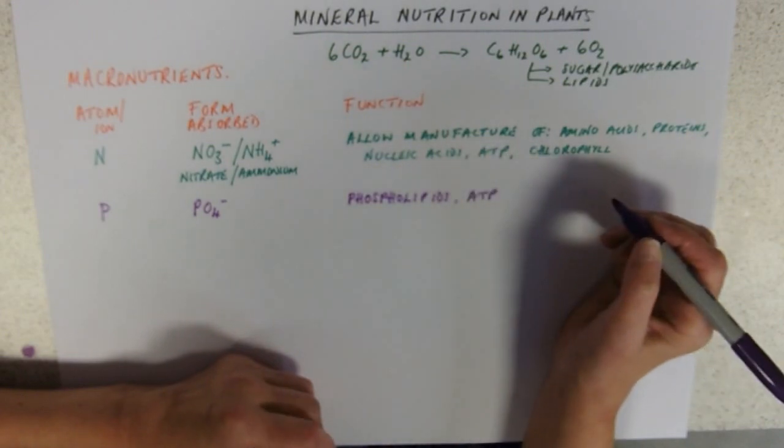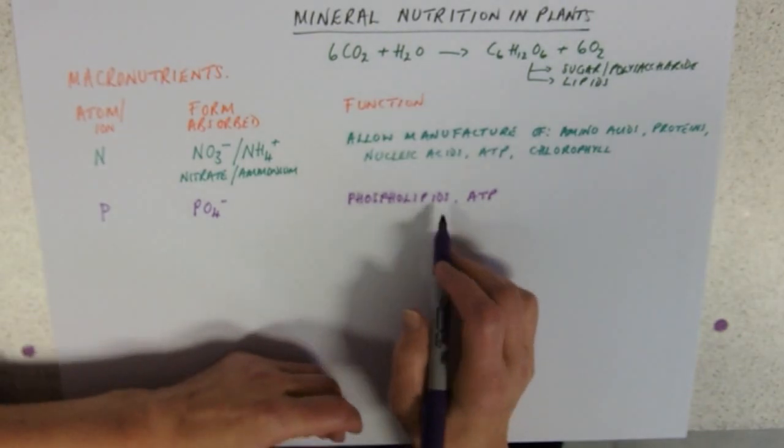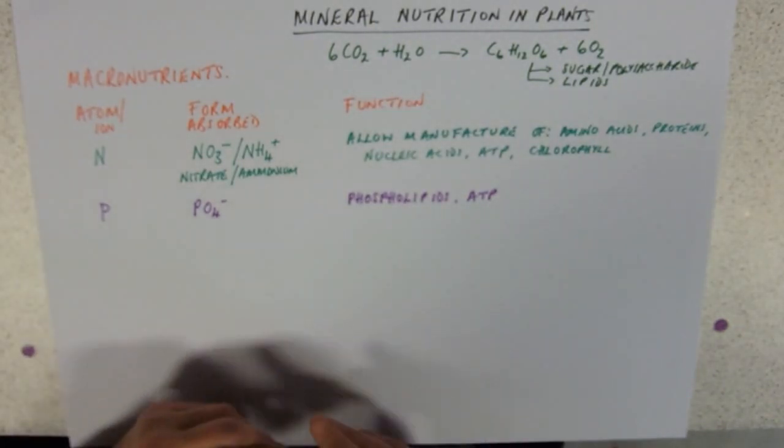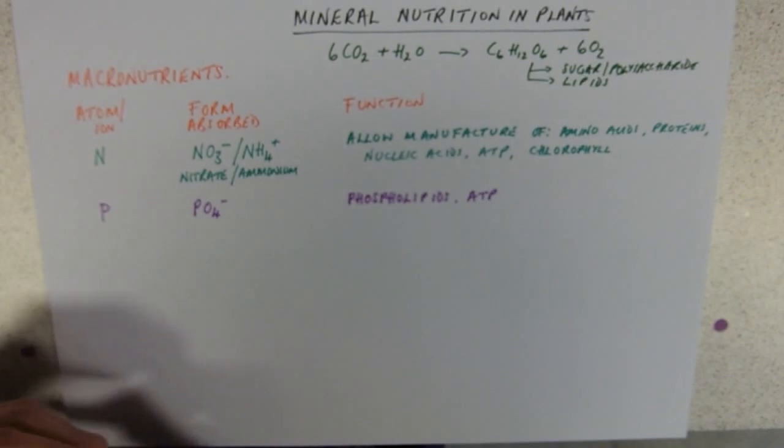Like phospholipids and ATP. If you can't make any phospholipids, then you're not going to be able to make new cell membrane for new cells. So again it will stunt the plant growth, it won't be able to grow as much if it lacks phosphate.